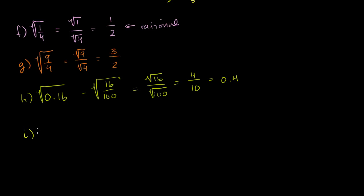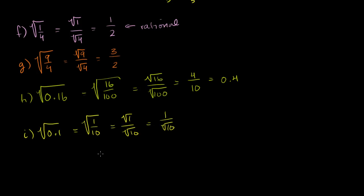Part i: square root of 0.1, which equals the square root of 1 over 10, which equals the square root of 1 over the square root of 10, which is 1 over the square root of 10. Since 10 is just 2 times 5 with no repeated factors, this is irrational — it'll never repeat on your calculator. If you want to rationalize the denominator, multiply by the square root of 10 over the square root of 10 to get the square root of 10 over 10, but both forms are irrational.